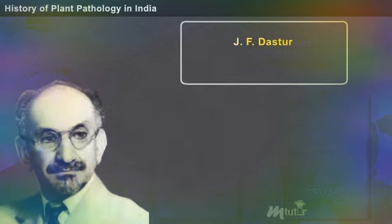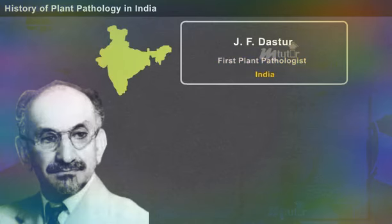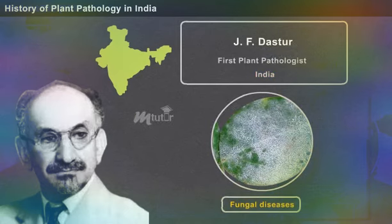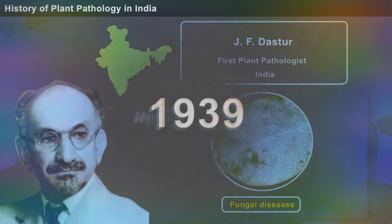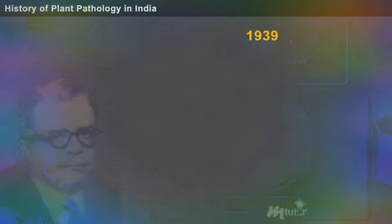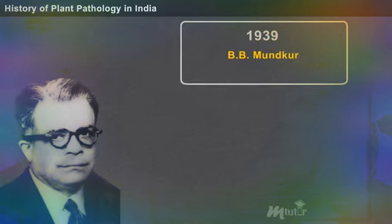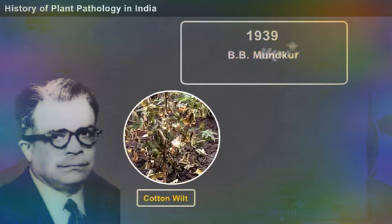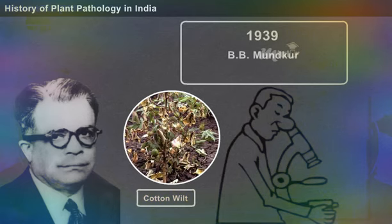J. F. Dastur, a colleague of Butler, was the first plant pathologist in India to carry out a detailed study on fungal diseases of plants. In 1939, B. B. Mundkur began to work on control measures of cotton wilt through varietal resistance and also identified and classified several Indian smut fungi.